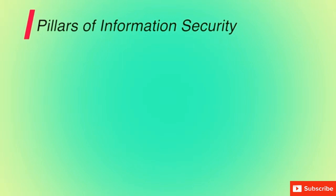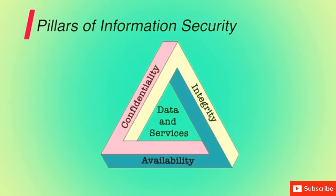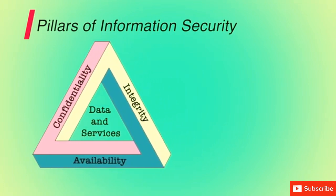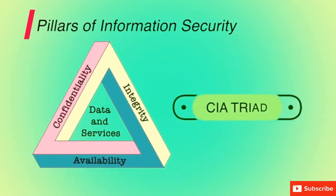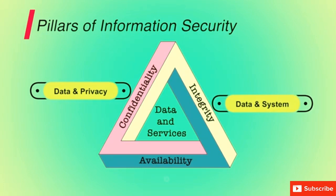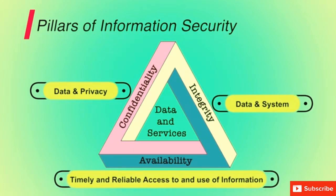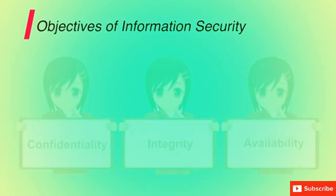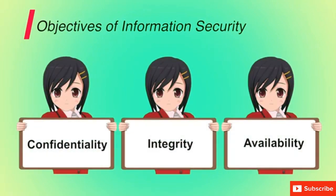Information security rests on three main pillars: confidentiality, integrity, and availability. These three pillars form what is often referred to as the CIA triad. Confidentiality covers both data confidentiality and privacy. Integrity covers both data and system integrity. Availability ensures timely and reliable access to and use of information. These are the three main objectives of information security.